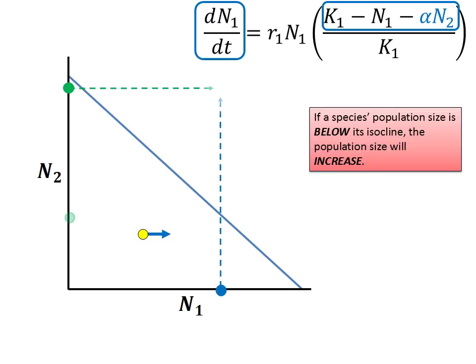Again, if the point is not on the species 1 zero growth isocline, the species 1 population will change. Because this point is located above the isocline, the population size of species 1, or n1, is going to decrease.